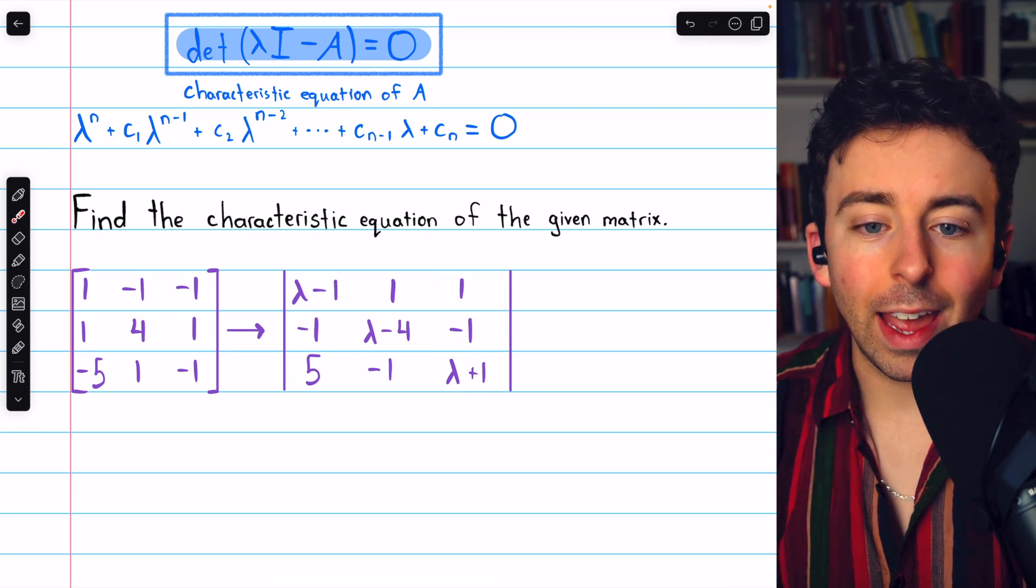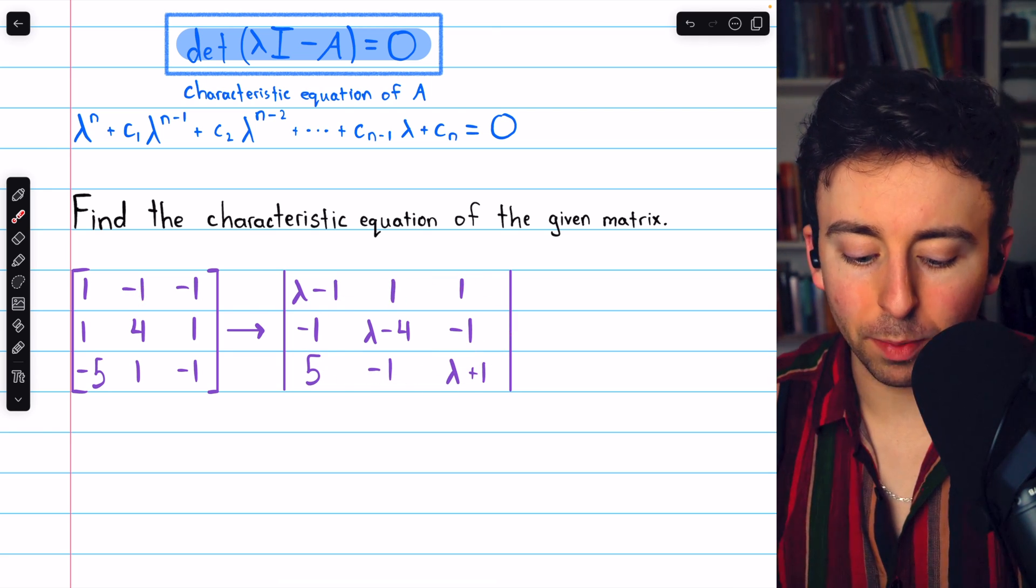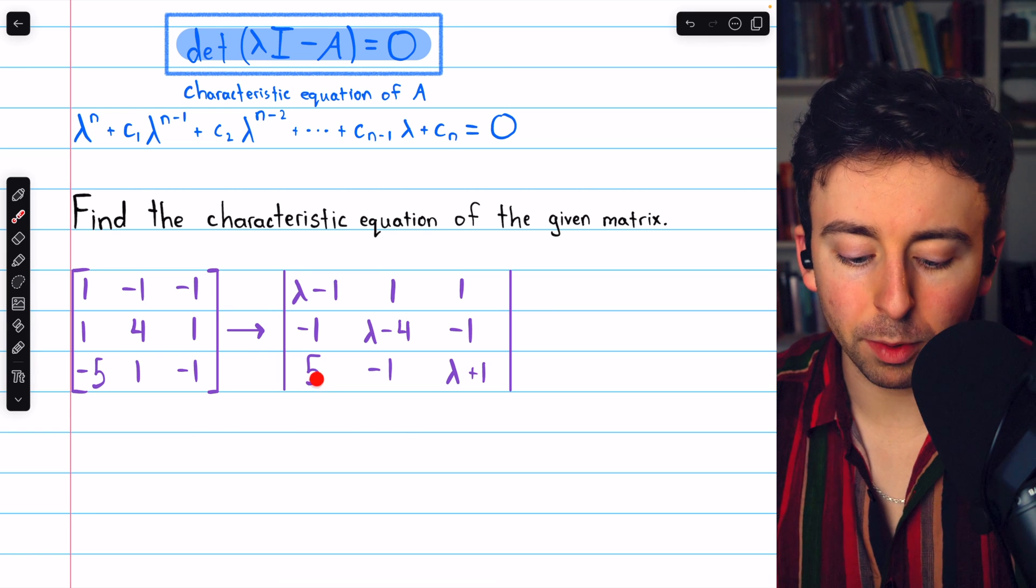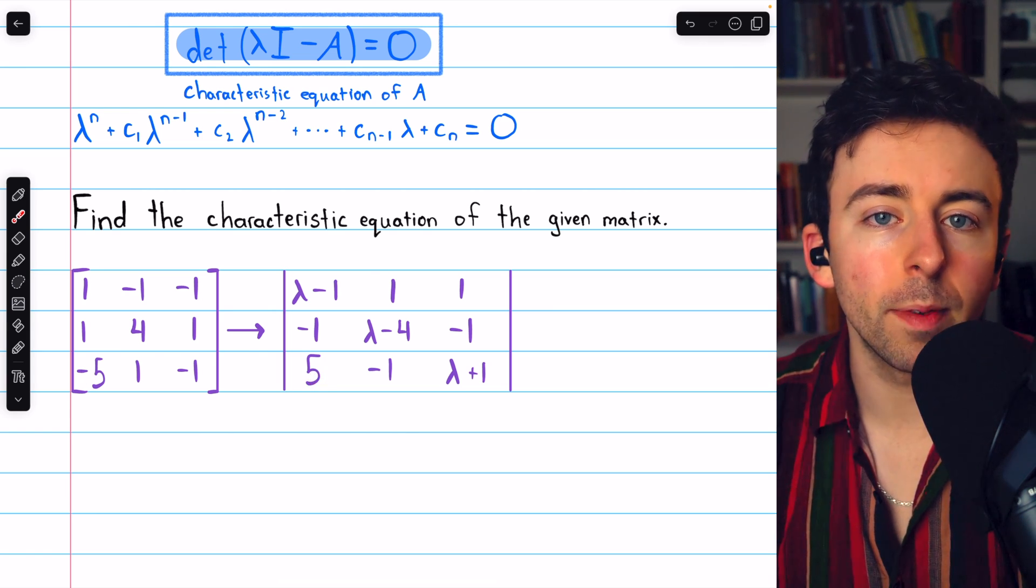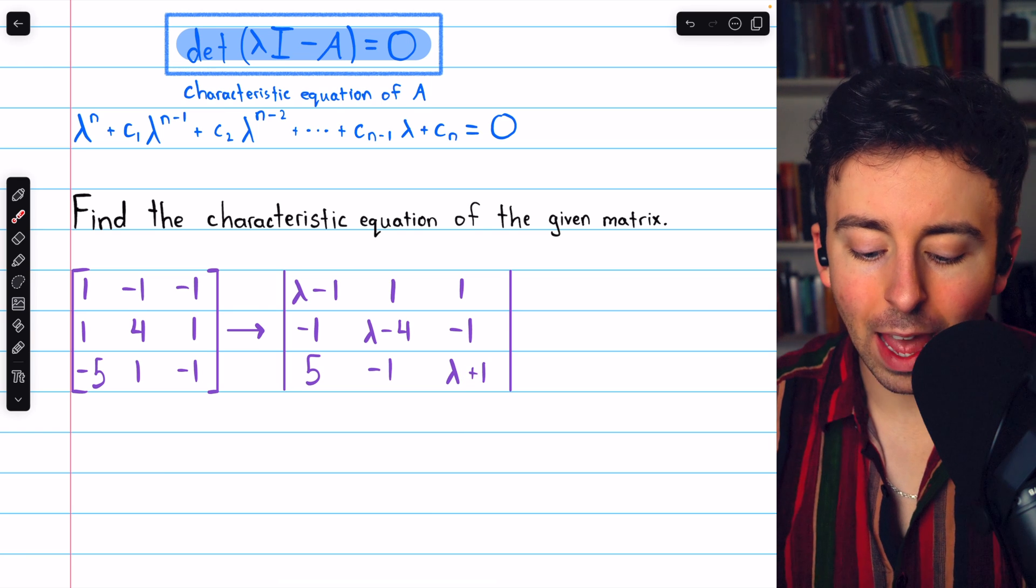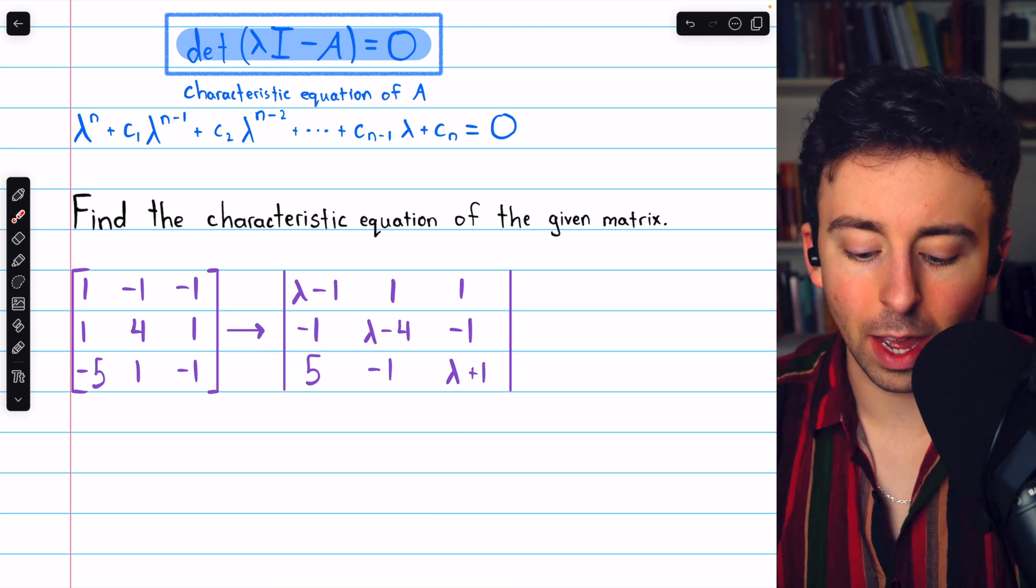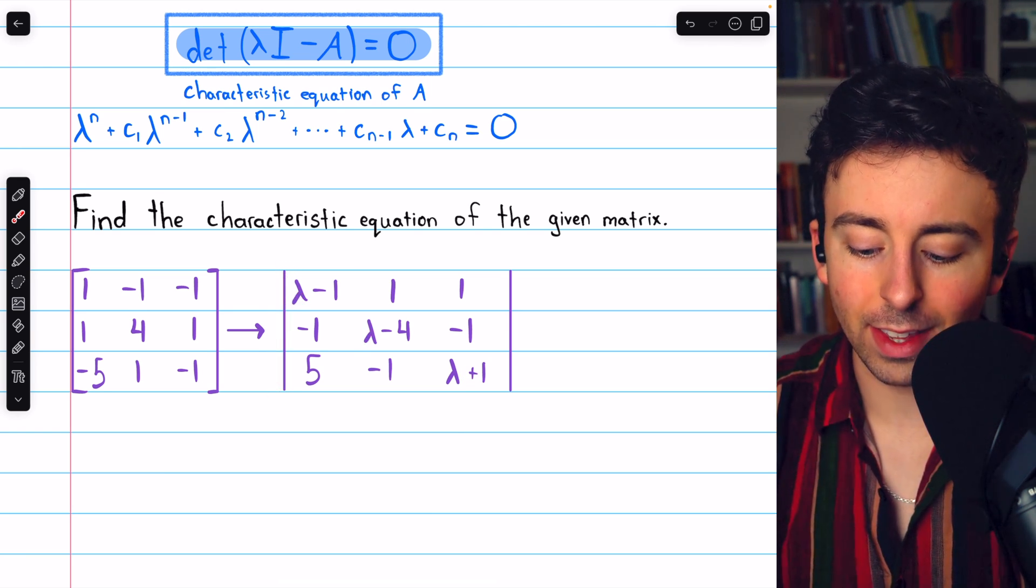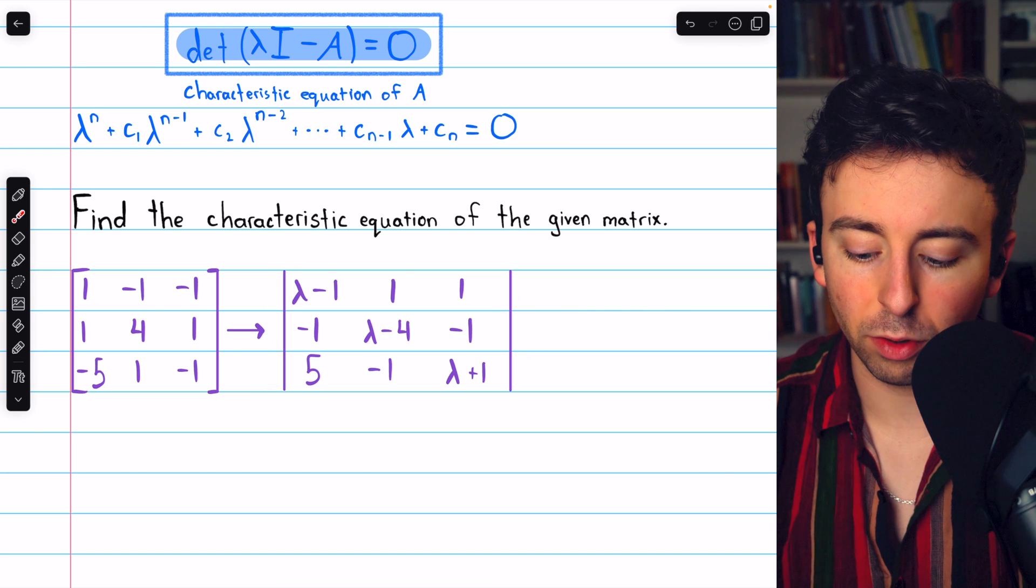Lambda times the identity minus A just looks like this. All of the entries of A are negated, so negative 1 becomes positive 1, negative 5 becomes positive 5, and so on. And then the entries on the main diagonal have a lambda added to them. And then, of course, we're taking the determinant, so we've got those straight bars.